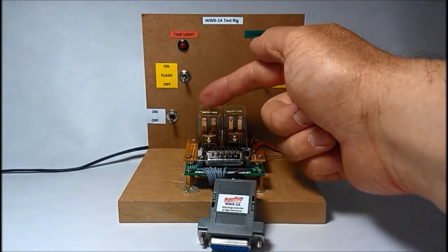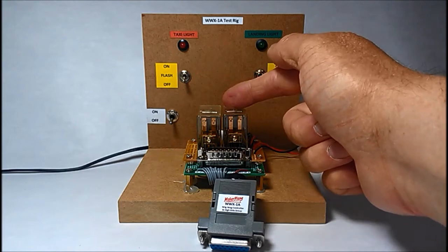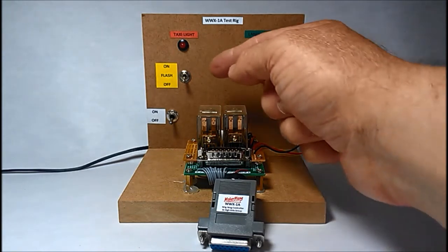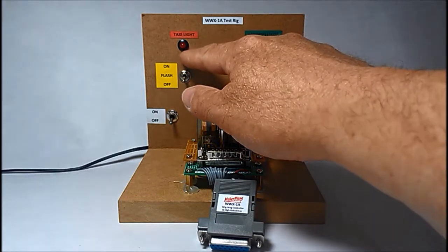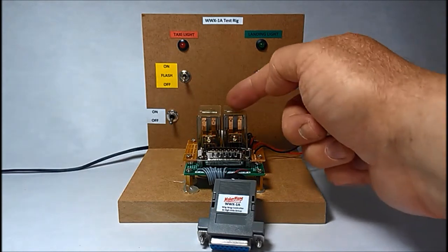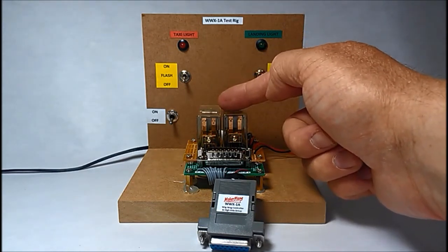In the test harness behind you can see a couple of relays here. And standing in for really bright lights and high current draw lights, I've got a couple of LEDs here. The red one here is for the taxi and the green one for landing light. They are on a separate circuit being driven from the relays.